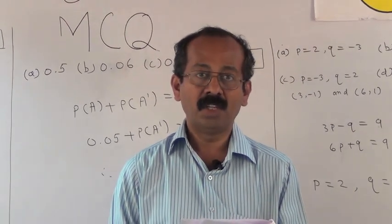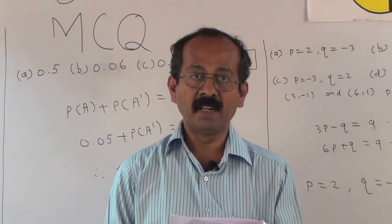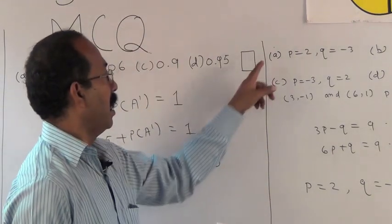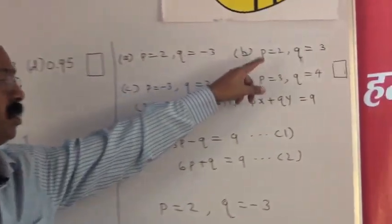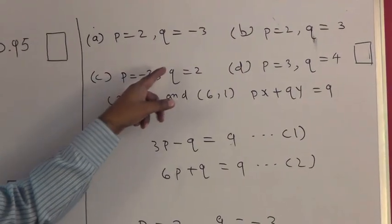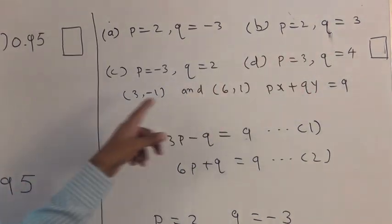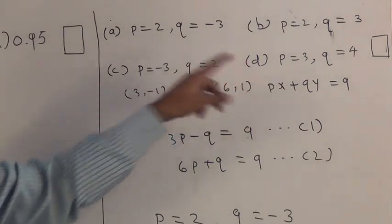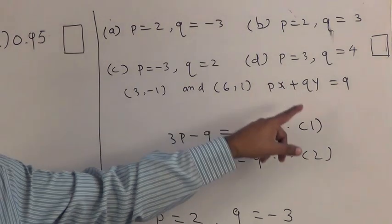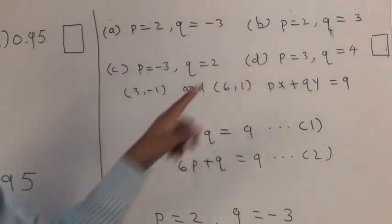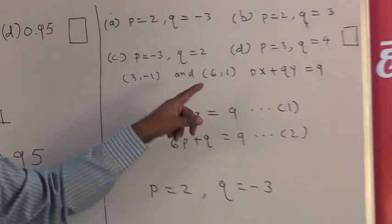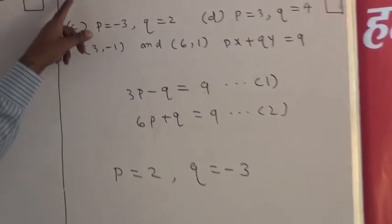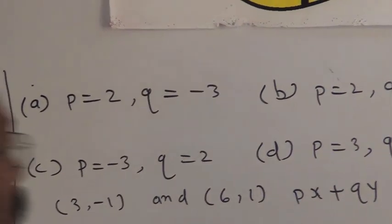Next: points (3, −1) and (6, 1) lie on the line represented by the equation px + qy = 9. Find the values of p and q. The alternatives are a) p=2, q=−3; b) p=2, q=3; c) p=−3, q=2; d) p=3, q=4. Substituting (3, −1): 3p − q = 9 (equation 1). Substituting (6, 1): 6p + q = 9 (equation 2). After solving equations 1 and 2, p = 2 and q = 3, so the correct alternative is b.